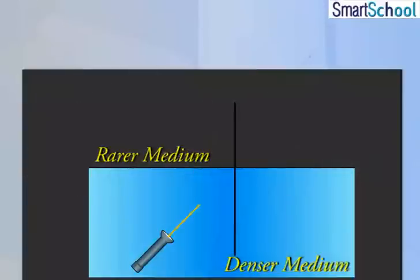When light travels from an optically denser to a rarer medium, it bends away from the normal.